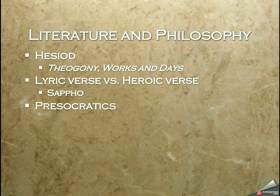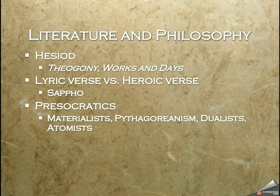That brings us to philosophy with the pre-Socratics — so-called because everything before Socrates is basically referred to as the pre-Socratics. Among them we have a number of different schools that formed the foundation for the very advanced Greek philosophy to come: the materialists, the Pythagoreans, the dualists, and the atomists. The atomists proposed the idea of tiny bits of matter so small they were unable to be seen, and referred to them as atoms — from a word meaning literally 'unable to be cut.'